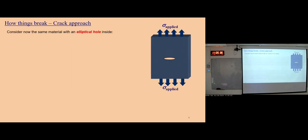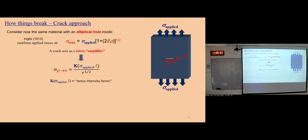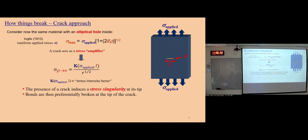What's missing is defects. In materials there are many defects like micro-cracks. From the crack approach, we consider the same material with an elliptical hole inside. The maximum stress at the tip of the hole is amplified by the ratio between the crack length and the tip radius. This means a crack is a stress amplifier. When the radius of the tip approaches zero, the stress field around the tip is expressed as K over root R. K is the stress intensity factor — the amplification of stress — and R is the distance from the observation point to the tip. The presence of a crack induces stress singularity at its tip, so bonds preferentially break there. This leads to a large decrease in effective strength compared to the theoretical strength.